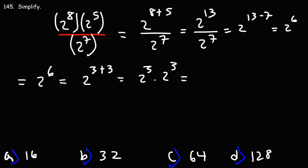2 to the 3, 2 times 2 times 2 is 8, so this is 8 times 8, which is 64. So 2 to the 6 power, if you multiply 2 to the 6 times, you'll get 64. So C is the right answer.